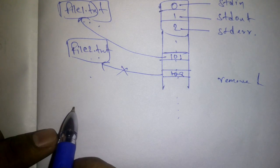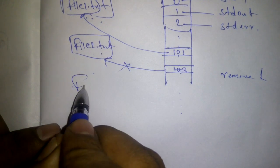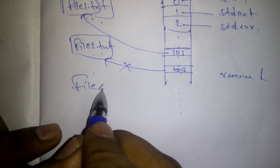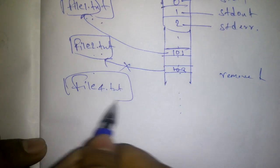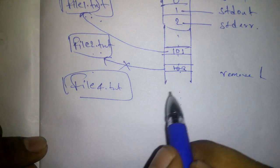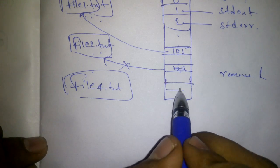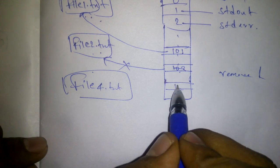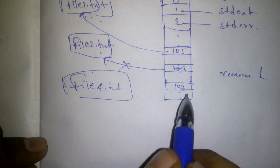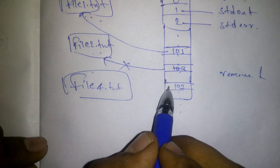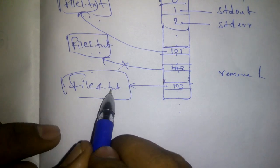So whenever another file is opened — say file4.txt — the operating system may allocate the freed file descriptor 103 to it.